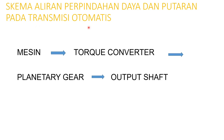Skema aliran perpindahan daya pada transmisi otomatis: dari engine kemudian menuju ke torque converter. Dari torque converter kemudian menuju ke planetary gear. Dari planetary gear langsung menuju ke poros output. Itu adalah skema aliran perpindahan daya dari engine ke poros output untuk menggerakkan roda bagian belakang.